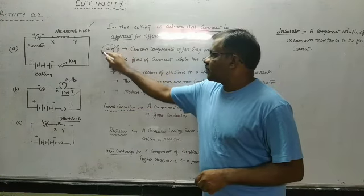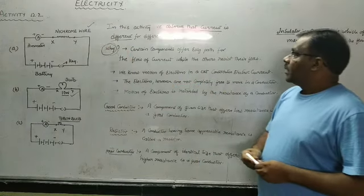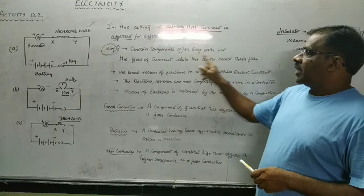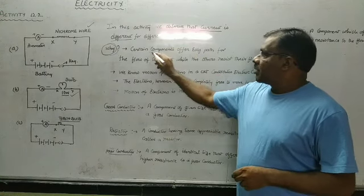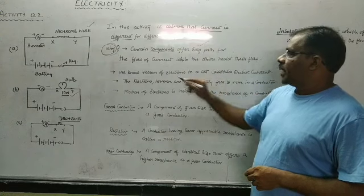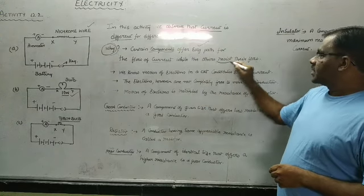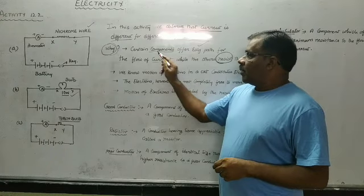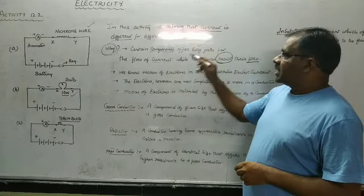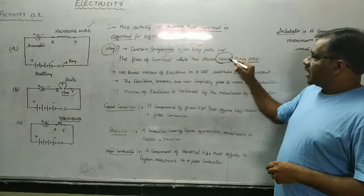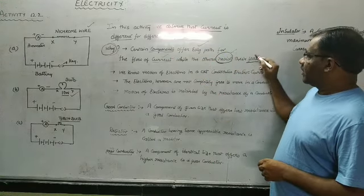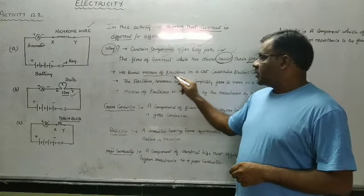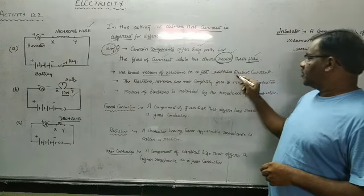The obvious question is: why is it different for each component? We know that certain components offer an easy path for the flow of current, while others resist the flow of current. Some components allow current to flow easily, whereas certain components resist the flow of current. We also know that the motion of electrons in a circuit constitutes electric current.